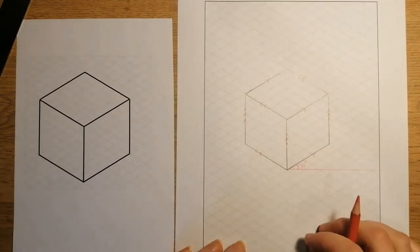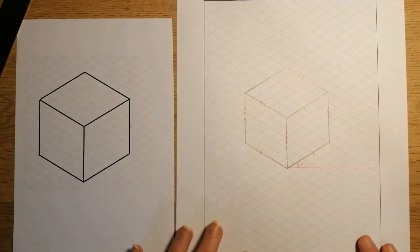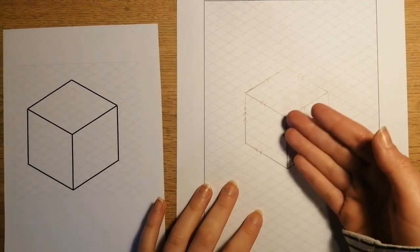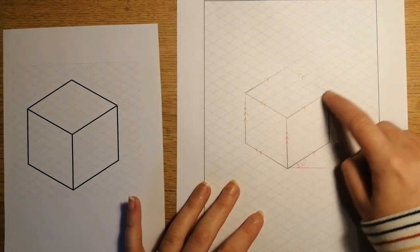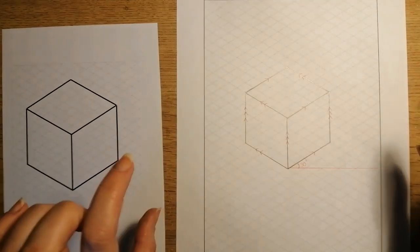With this, you've got your cube. Obviously, if you wanted to draw a cuboid, then you would simply elongate the vertical lines or perhaps make these sections here a bit longer for a kind of shorter, wider cuboid.